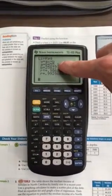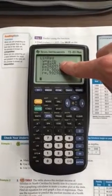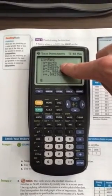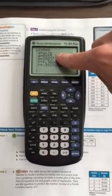So this slope means that for every increase in family size by 1, the median income goes up $8,455.